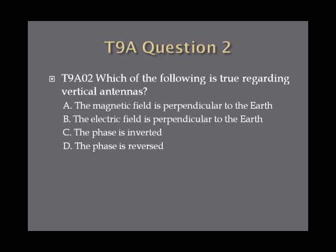Question 2: Which of the following is true regarding vertical antennas? A. The magnetic field is perpendicular to the earth. B. The electric field is perpendicular to the earth. C. The phase is inverted. Or D. The phase is reversed.